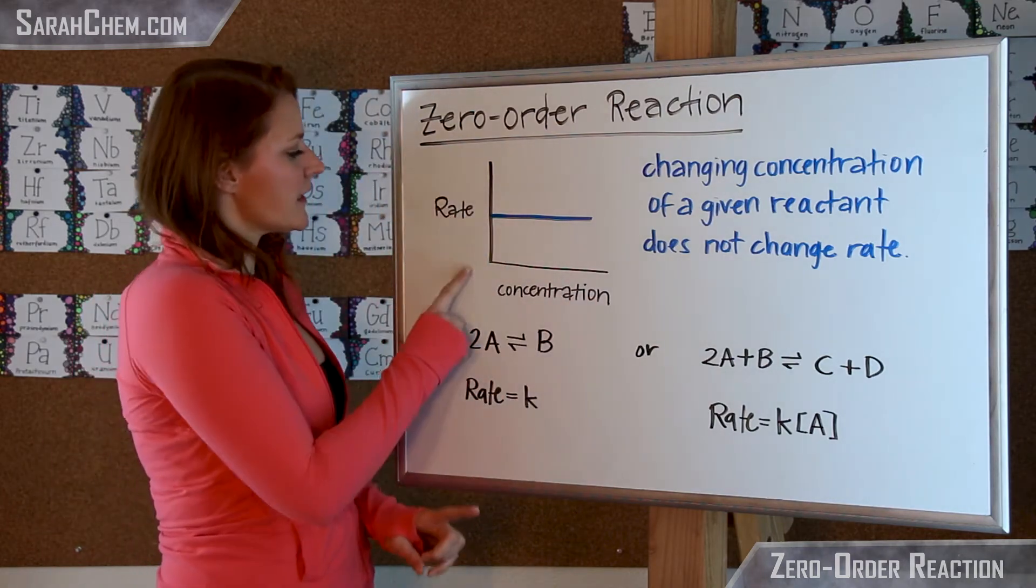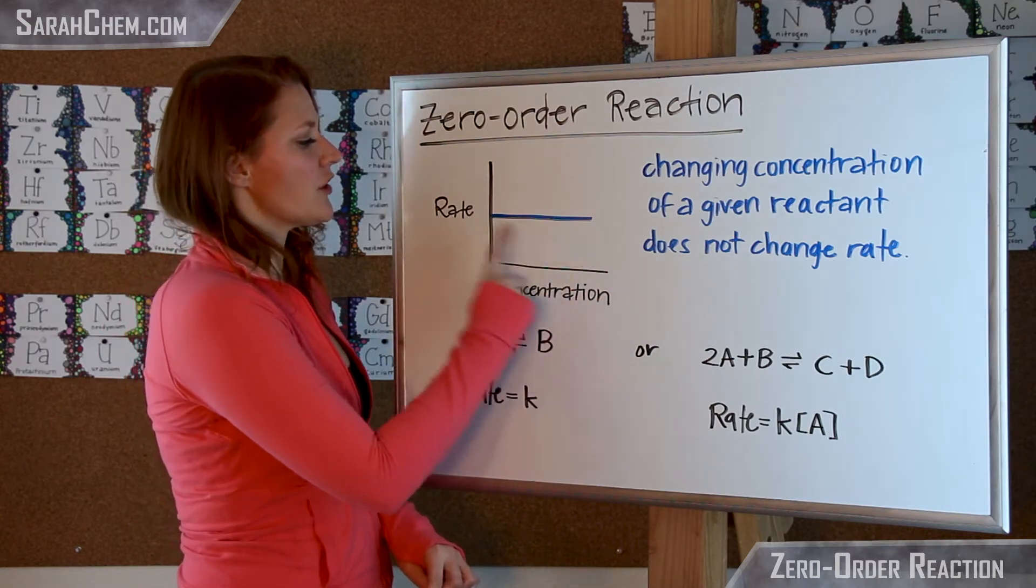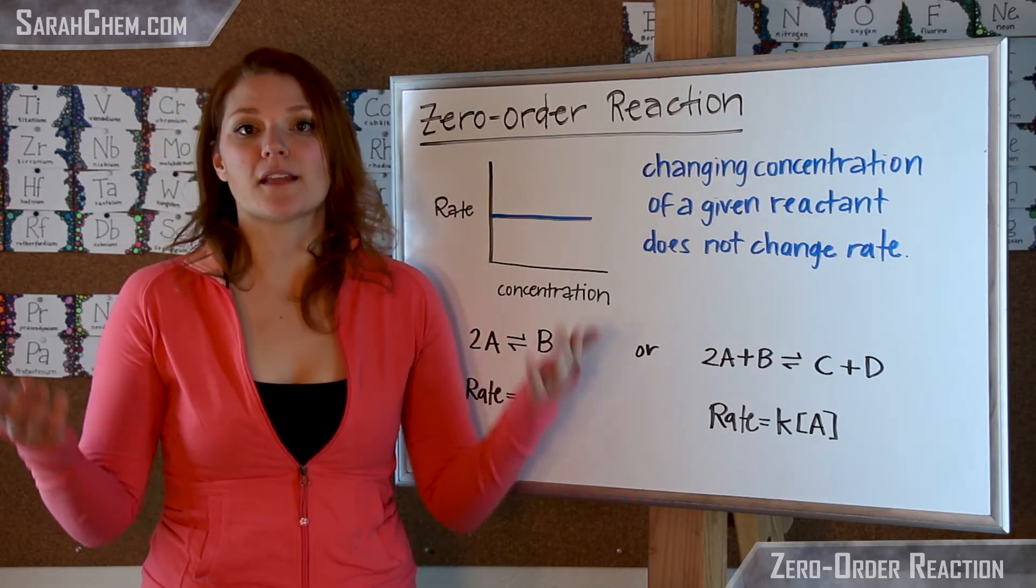If we take a look here, we see that this is our rate and this is our concentration. As our concentration changes, we see that there is no change in the rate. This is a depiction of what it means to be zero order.